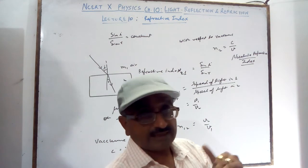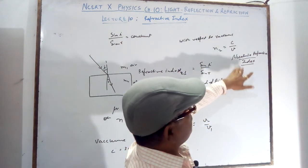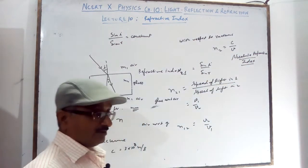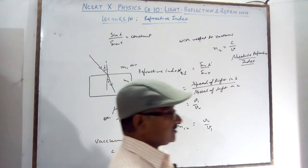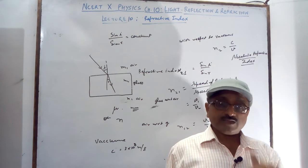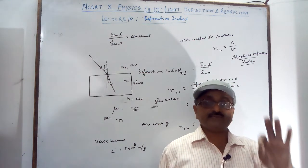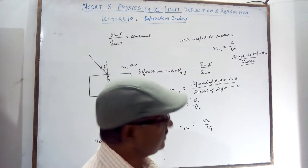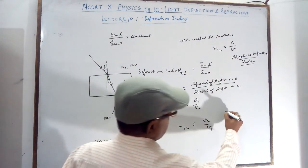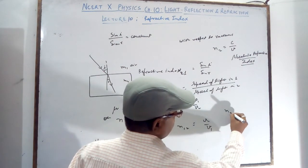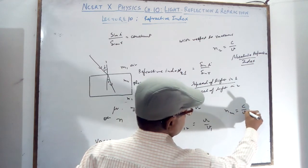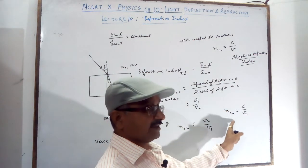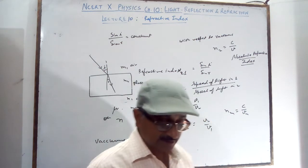It is an absolute refractive index of the medium. Directly you can write absolute refractive index of the medium, like glass or water or any other substance. The first medium is vacuum and then any medium. So you can write N2 or NM Medium is equal to C by V of medium, velocity in that medium. Any medium, it may be glass, it may be air, it may be water, or it may be any other.